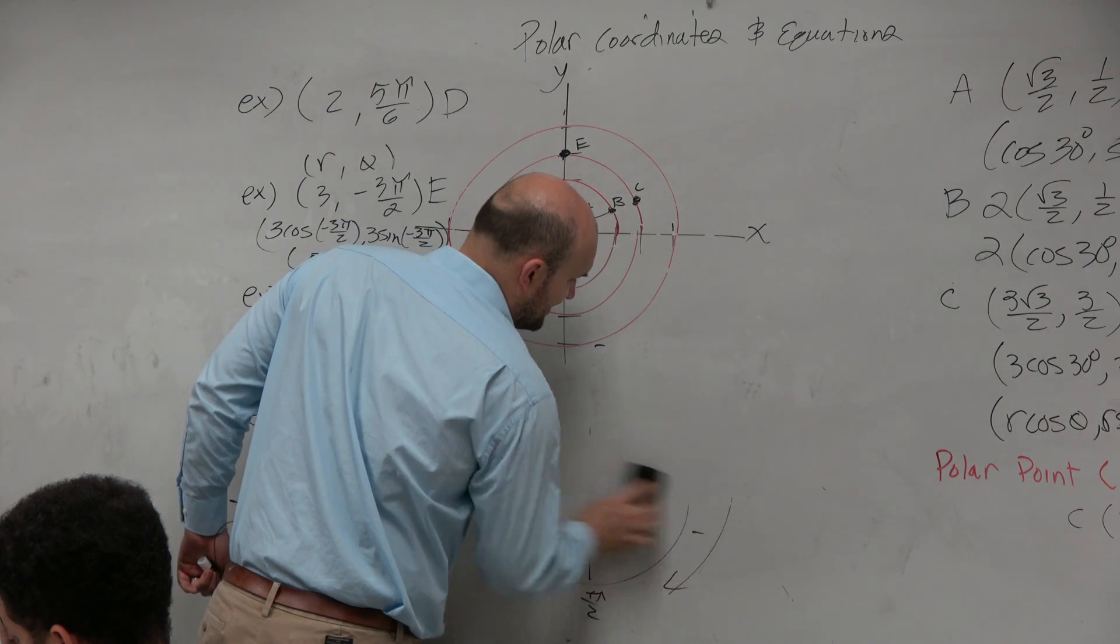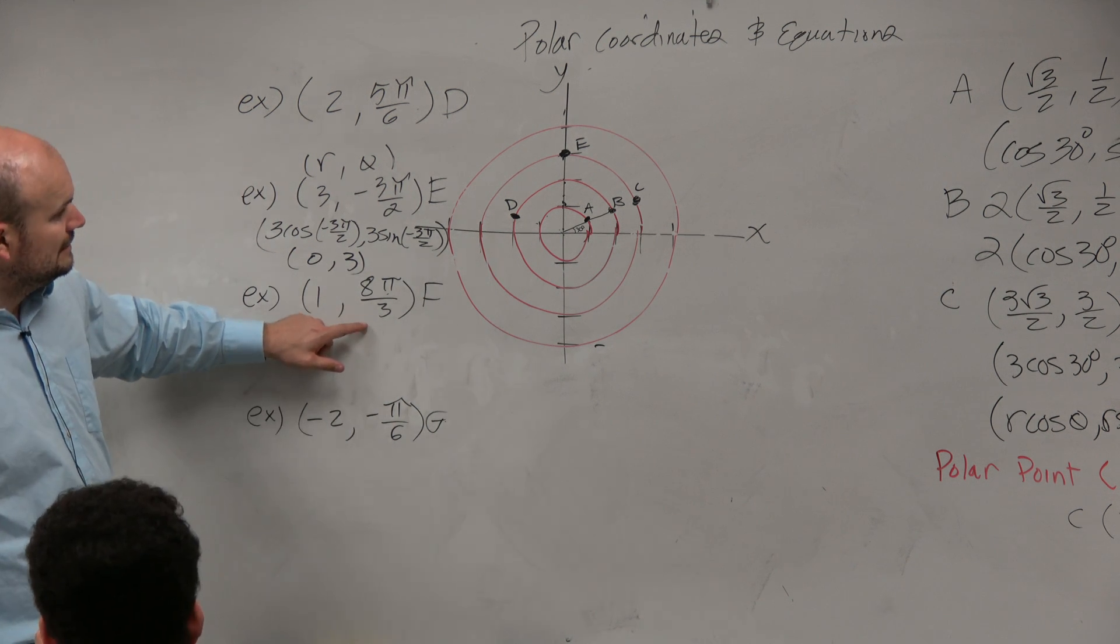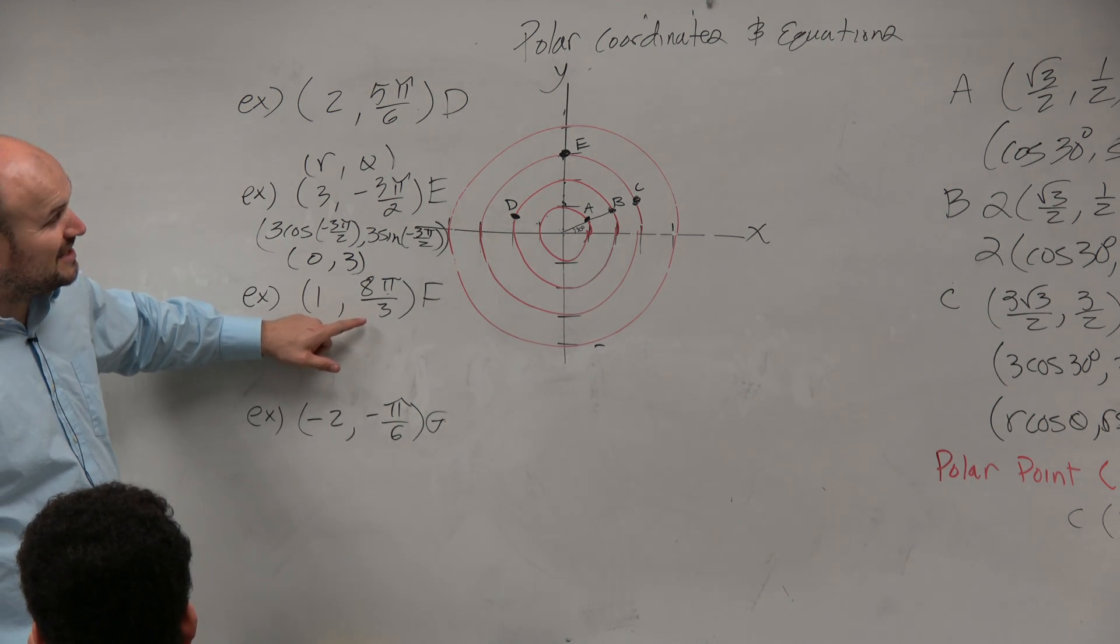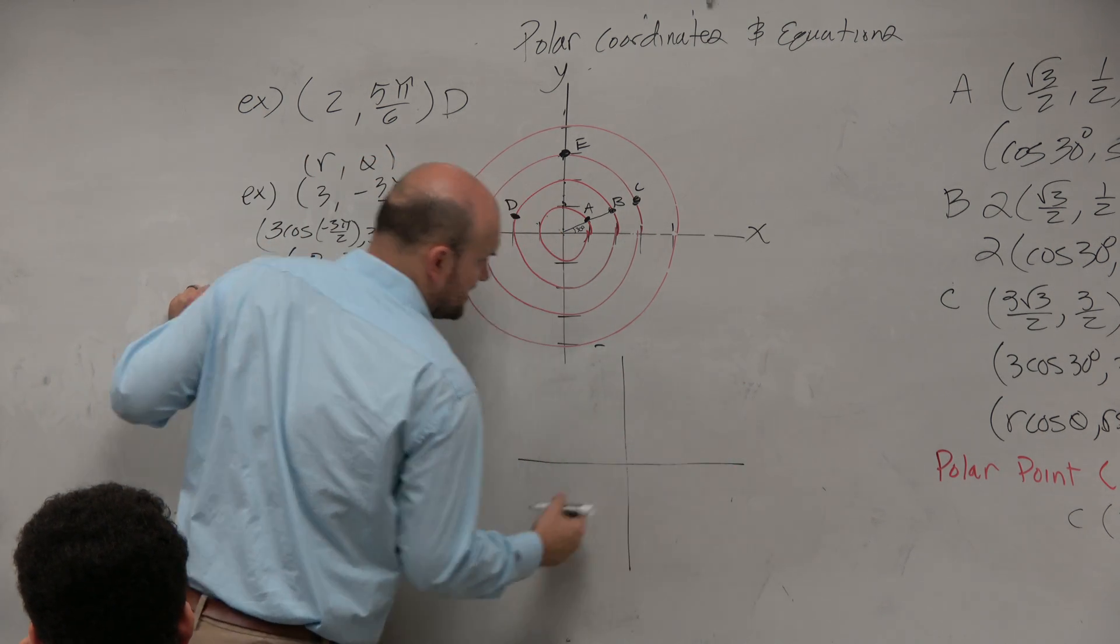So could I maybe rewrite this angle using a simpler form? 2 over 3, 2π over 3. I'm not sure if that's the same, so let's take a look. All right,